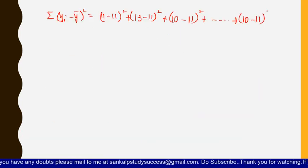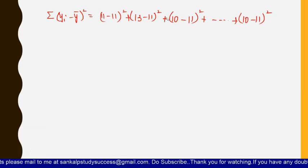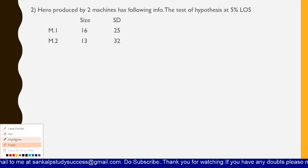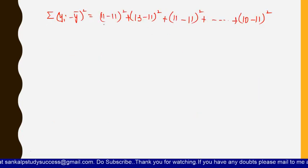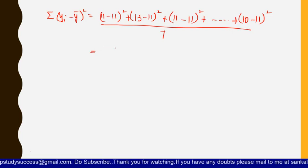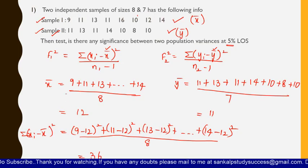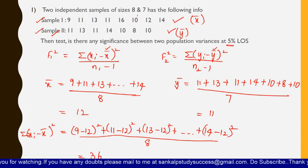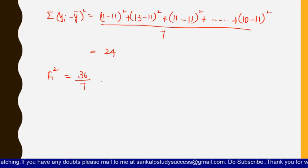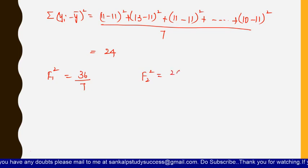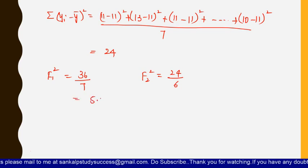Correcting one value — the third observation in sample 2 is 11, not 10 — so that term is (11−11)². Dividing the total sum by 7 (number of observations in sample 2) gives Σ(yi − ȳ)² = 24. Therefore, F1² = 36 / (8−1) = 36/7 ≈ 5.14, and F2² = 24 / (7−1) = 24/6 = 4.